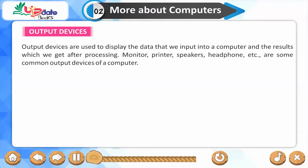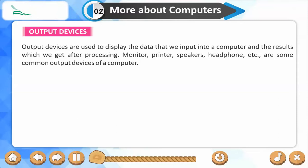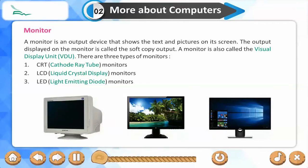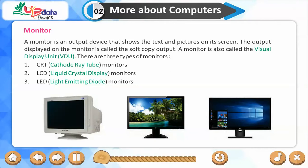Output devices are used to display the data that we input into a computer and the results we get after processing. Common output devices include monitor, printer, speakers, and headphones. A monitor is an output device that shows text and pictures on its screen. The output displayed on a monitor is called soft copy output. A monitor is also called the Visual Display Unit (VDU).